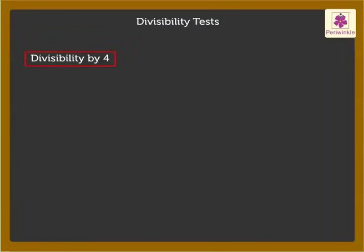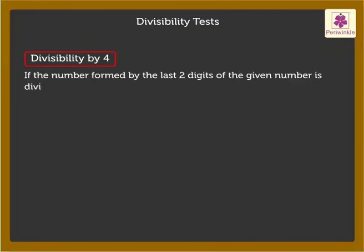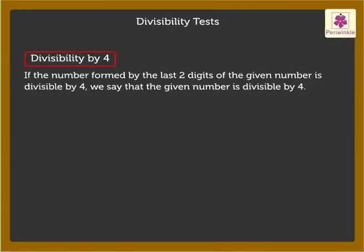Divisibility by 4: If the number formed by the last two digits of the given number is divisible by 4, we say that the given number is divisible by 4. For example, look at the number 164. Its last two digits form the number 64, which is divisible by 4. Thus, the whole number 164 is divisible by 4.